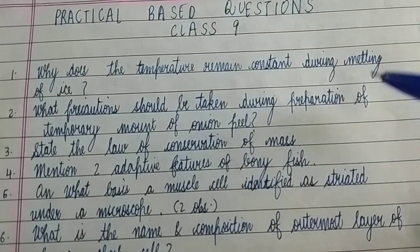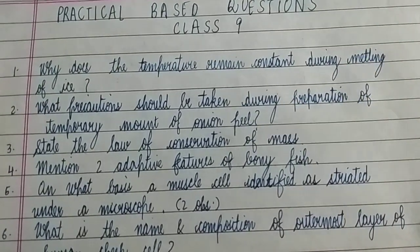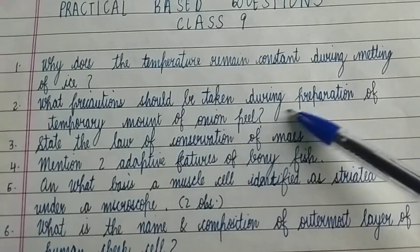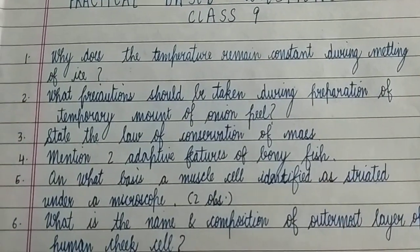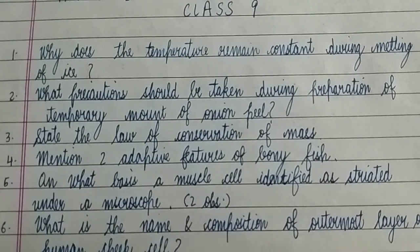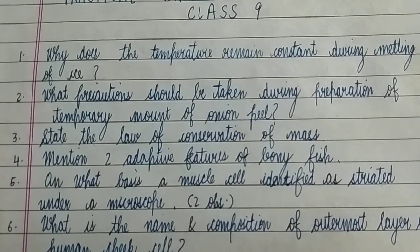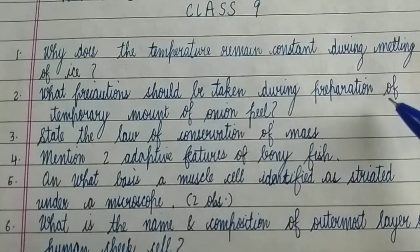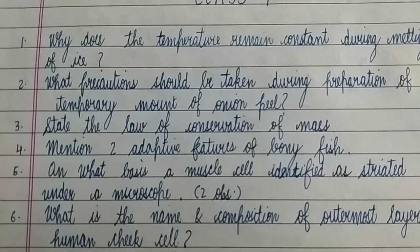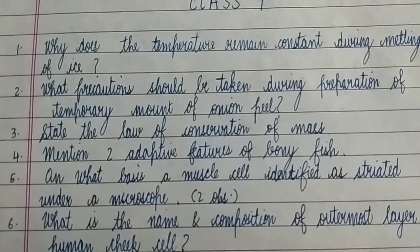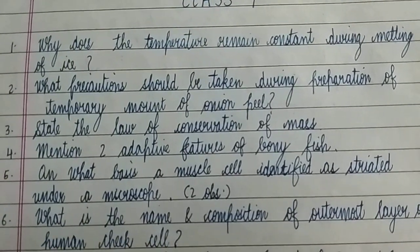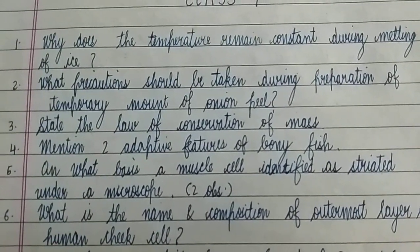The second question: What precautions should be taken during preparation of a temporary mount of onion peel? This is from your first activity of Biology. You should know the observations, results, and precautions of all your activities — then only will you be able to answer all the questions asked. These are just examples where you are asked about observations and other things.